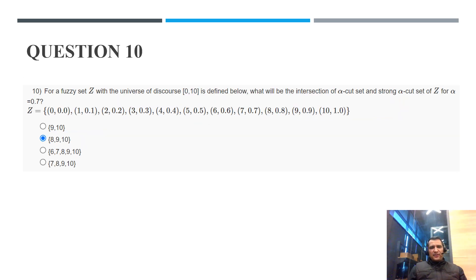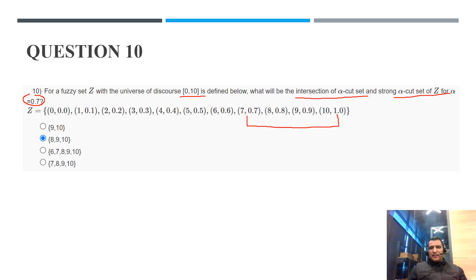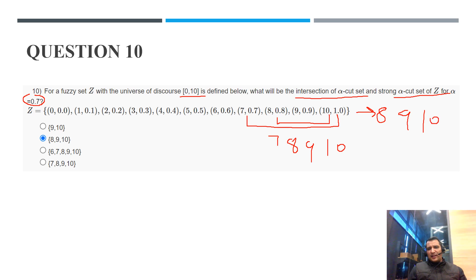Question 10: For fuzzy set Z with universe of discourse 0 to 10, what is the intersection of the alpha cut and strong alpha cut at alpha = 0.7? The normal alpha cut gives {7, 8, 9, 10} and the strong alpha cut gives {8, 9, 10}. The intersection of these two sets is {8, 9, 10}, so option B is correct.